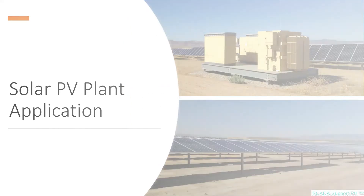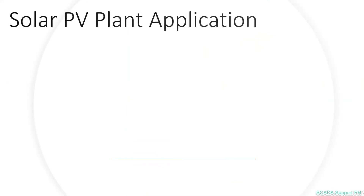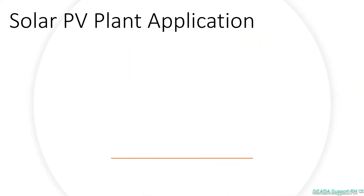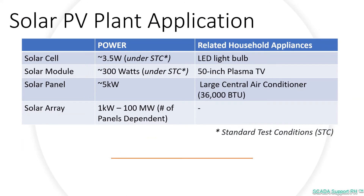Solar PV plant application. In this section, we will associate power and energy to a PV system. Here we have a tabular representation of each component. A solar cell is likely to have 3.5 watts of power under standard test conditions, or STC, and can power up a small light bulb.